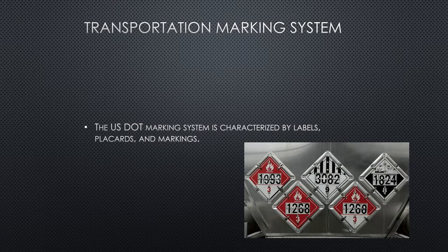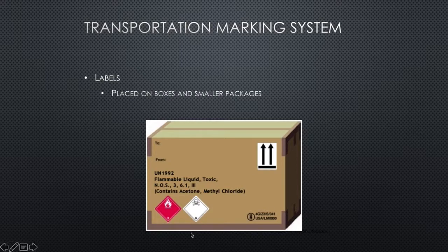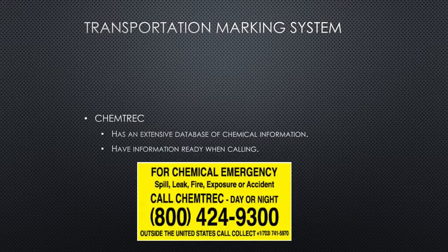Labels are smaller versions of placards that you find on boxes. You'll find labels on boxes of hazardous materials that are being transported. They're placed on the actual individual box and smaller packages, and they only refer to the potential hazard in that particular box — not necessarily other items that it's being shipped with.